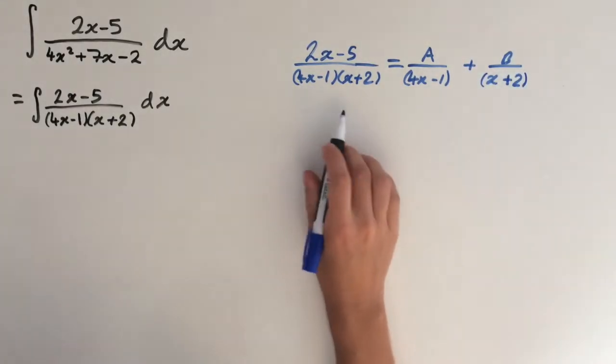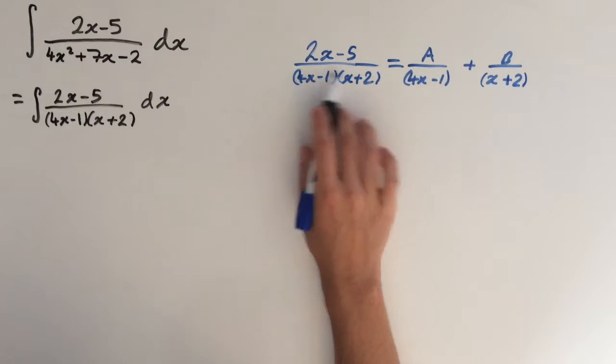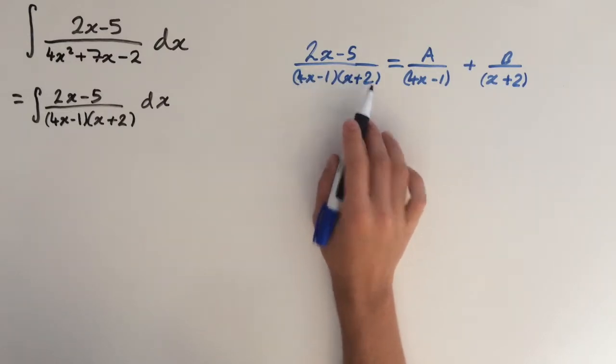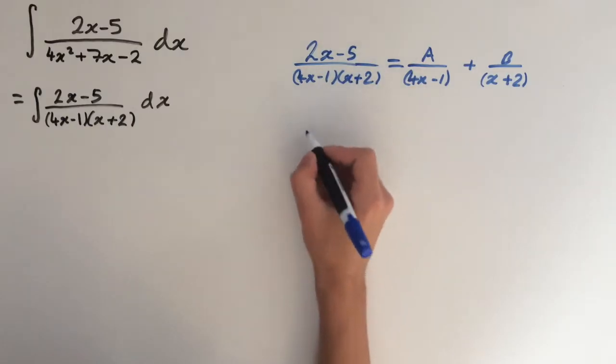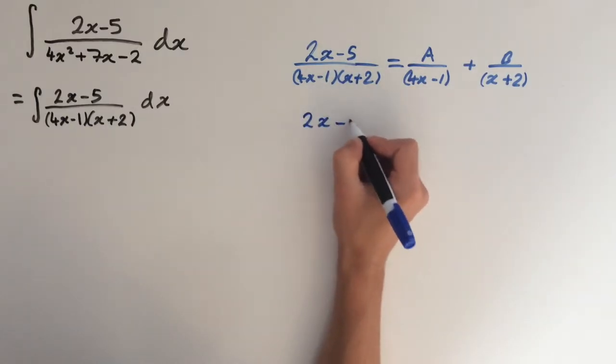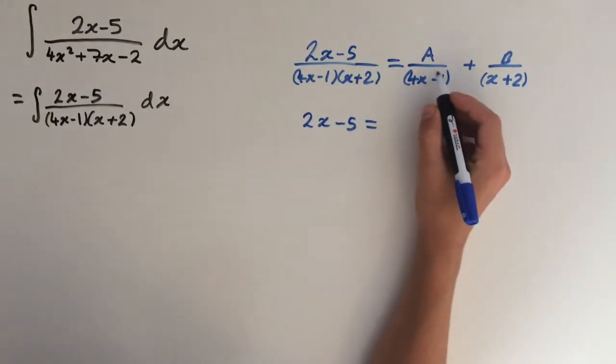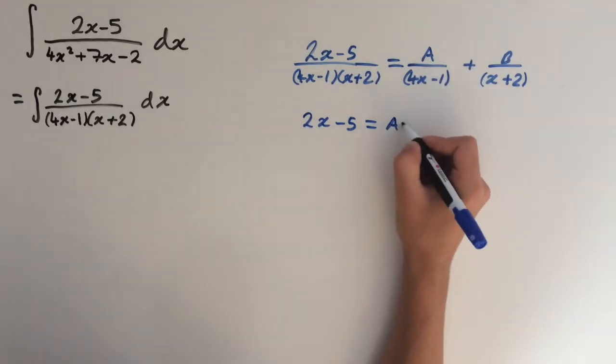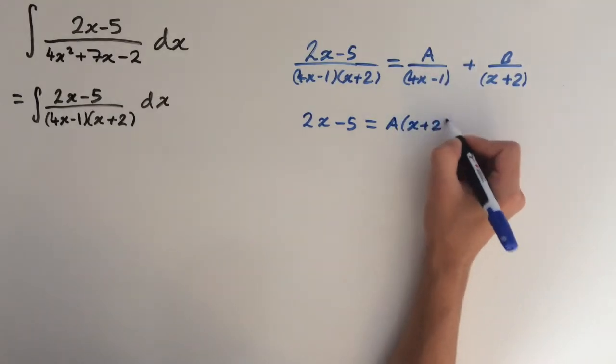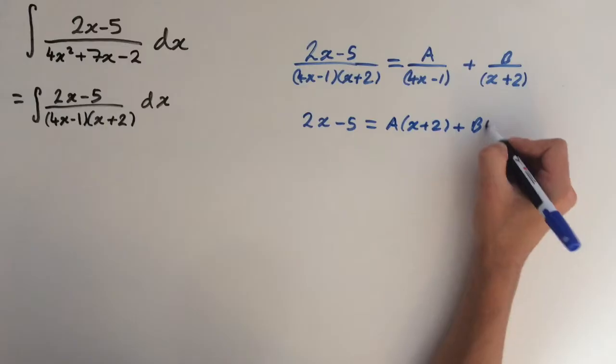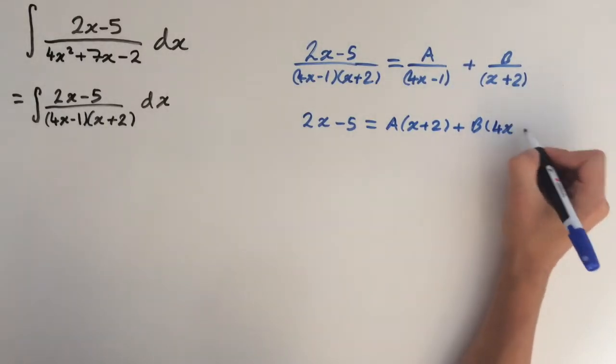So now we want to multiply both sides by this denominator, 4x-1 times x plus 2. So the denominator here will just disappear. So we get 2x-5, and on the right hand side we get A times x plus 2 plus B times 4x-1.